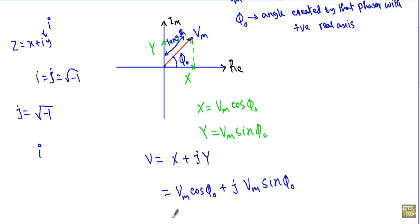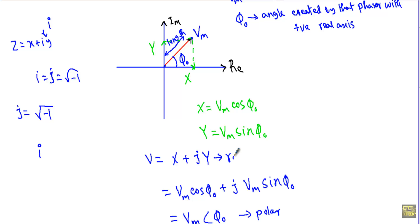We can express any alternating quantity in two phasor forms. We use the polar form of phasors when performing multiplication and division, and we use the rectangular form when performing addition and subtraction of phasors or complex numbers.